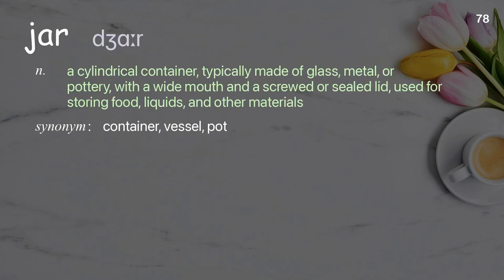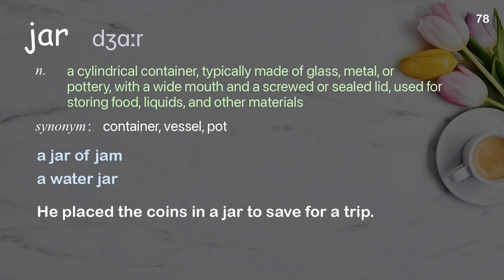Jar: a cylindrical container typically made of glass, metal, or pottery, with a wide mouth and a screwed or sealed lid, used for storing food, liquids, and other materials. Examples: a jar of jam, a water jar. He placed the coins in a jar to save for a trip.